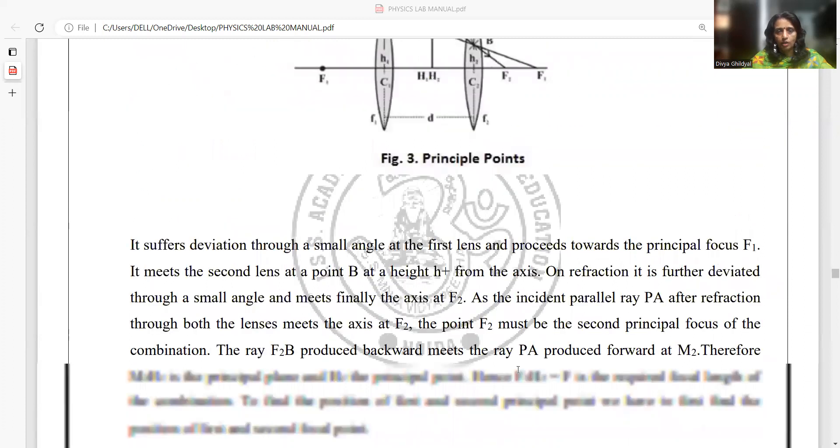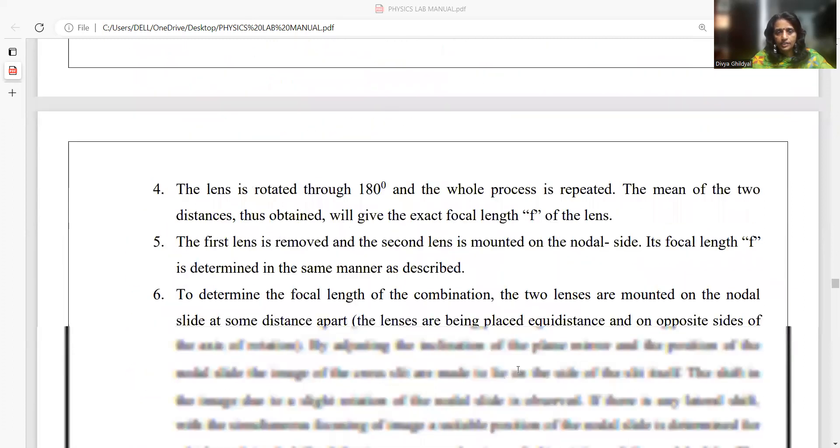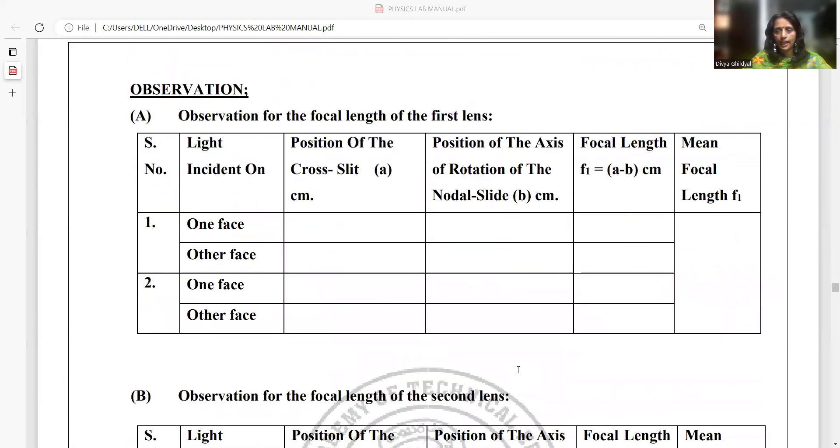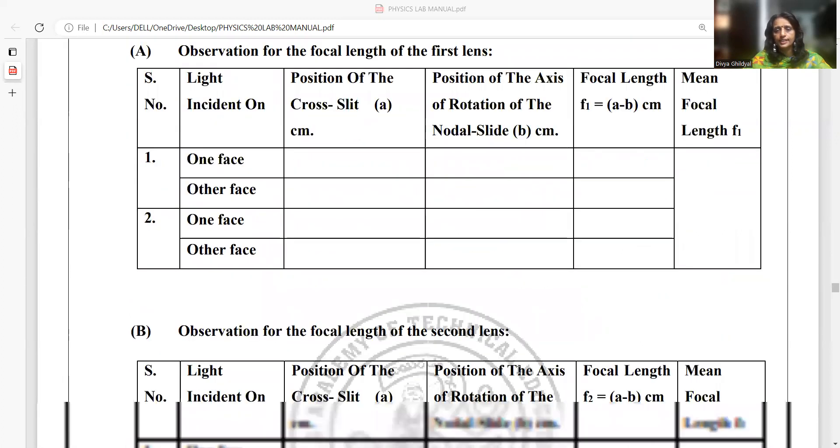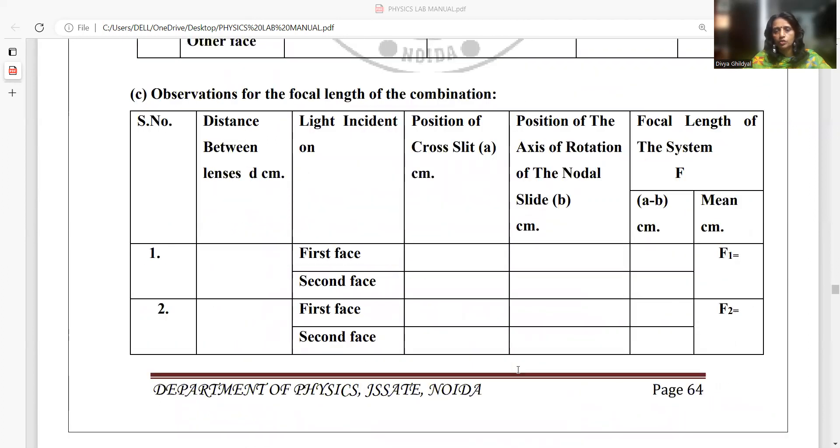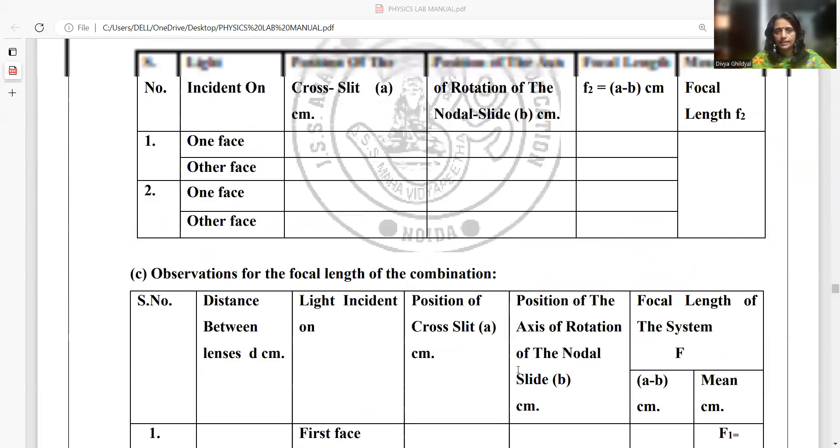For the observation table, we will draw three observation tables in this experiment: f1 for first lens, f2 for the second lens, and f1 plus f2, that is combination of both the lenses in the third table.